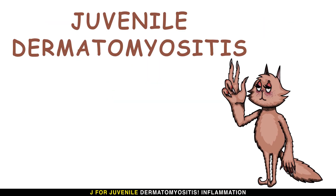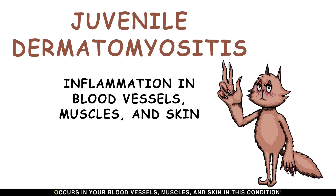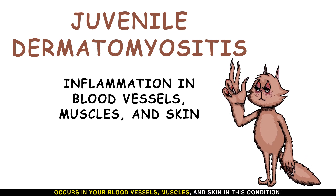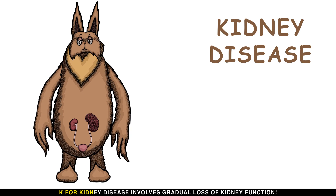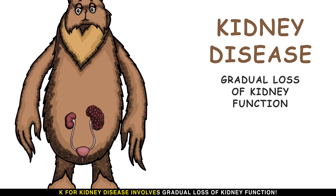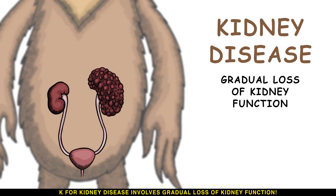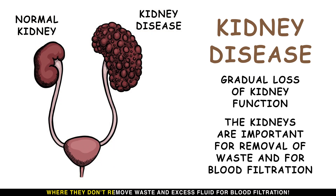J is for juvenile dermatomyositis — inflammation occurs in the blood vessels, muscles, and skin. K is for kidney disease, which involves gradual loss of kidney function, where the kidneys don't remove waste and excess fluid from the blood filtration.